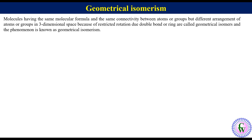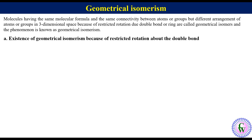Let's take the first case where existence of geometrical isomerism is because of restricted rotation about the double bond. Rotation about a double bond — be it a carbon-carbon double bond, carbon-nitrogen double bond, or nitrogen-nitrogen double bond — is restricted because of sideways overlap of two p-orbitals. I will first take you through the example of geometrical isomerism because of restricted rotation about the carbon-carbon double bond. This is the general structure of an alkene.